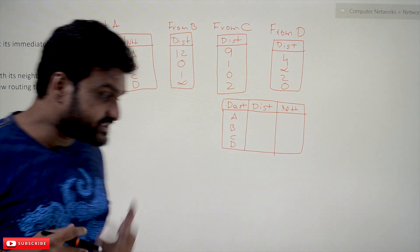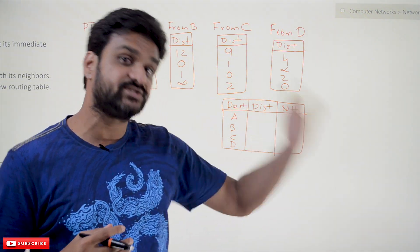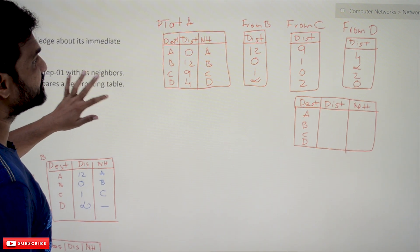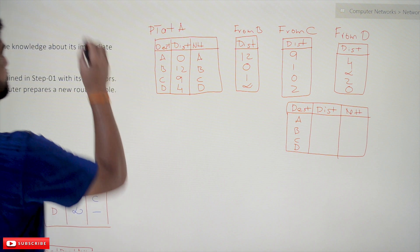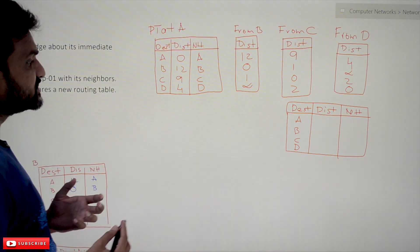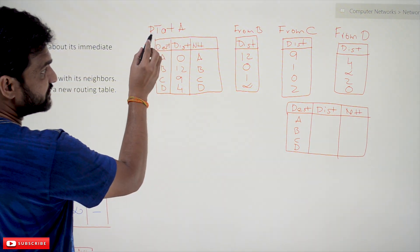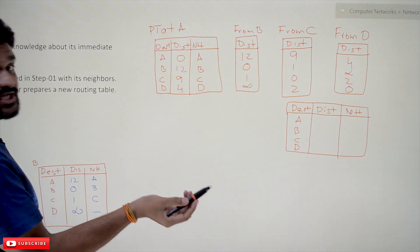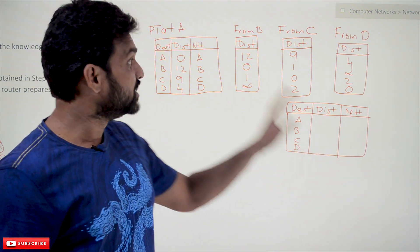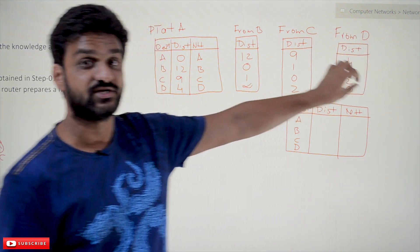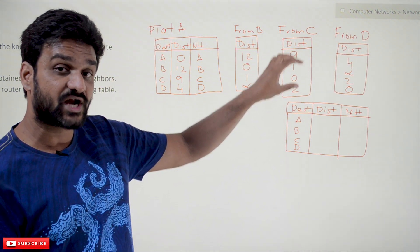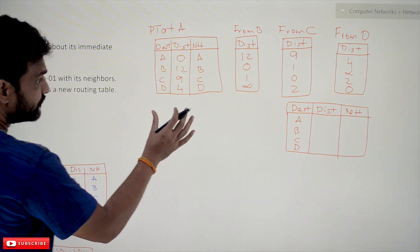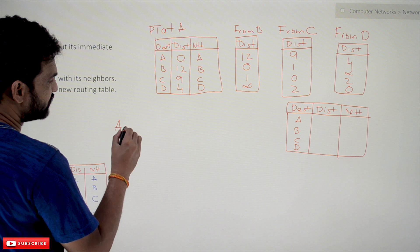Using these values, a new routing table will be generated. How that happens is very important to understand. To generate a new routing table, we again consider distances from A to A, A to B, A to C, and A to D. Previously we only had knowledge of immediate neighbors, but now we have the distance vectors of all routers obtained by all immediate neighbors.